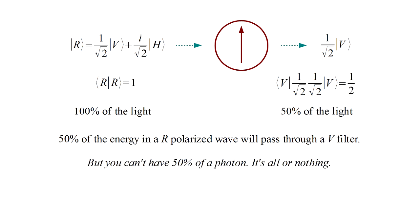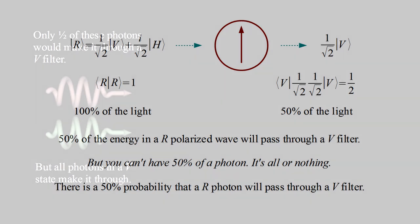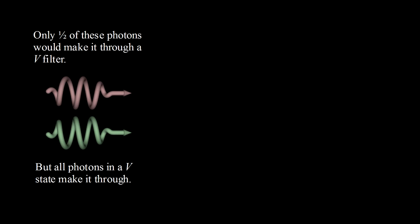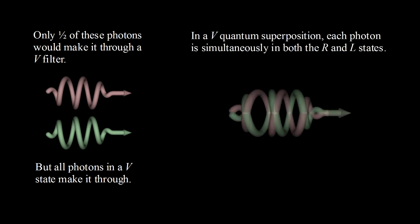You can have 50% of a wave, but you can't have 50% of a photon. It's all or nothing. Wave particle duality forces us to interpret this result as a probability for the photon to pass through the filter. So if a vertically polarized wave consisted of equal numbers of r and l circularly polarized photons, only half of them would make it through a v filter. But all of the photons in a v polarized wave have to make it through. We're forced to conclude that in the v quantum superposition, each individual photon is simultaneously in both the r and l states.